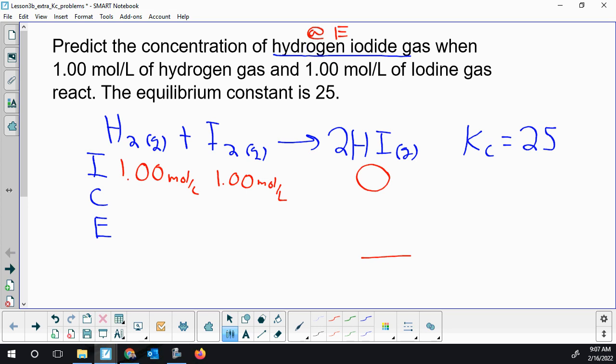So strategy-wise, we don't have an I and an E, so we're not going to fill the whole ICE table in. We don't have all the E's but one, so that strategy is out. This is when you have I's and you have a K value, and that's when you have to use the x's.